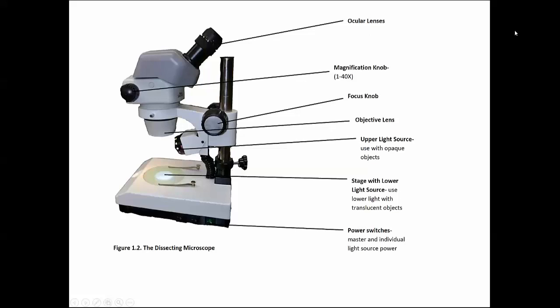The dissecting scopes tend to go up to about 40x total magnification and that's where the compound scopes pick up. So they start at 40 and go up to about 400. There's a focus knob, there's a light source, there's usually a rheostat. There's usually more than one light source on these, one from above for looking at 3D objects like your hand or a bug. There is a light from beneath to look through water samples or slides.